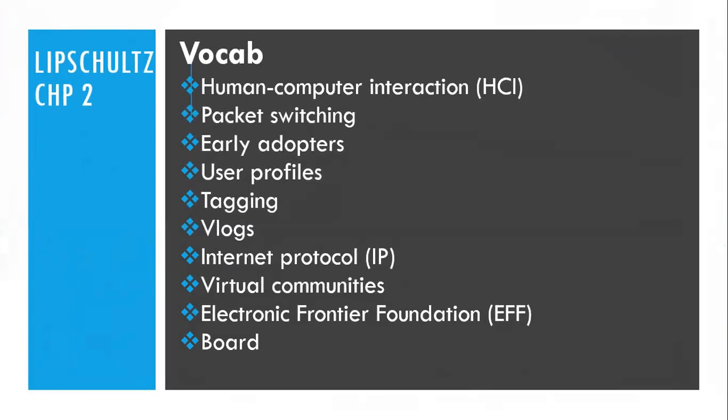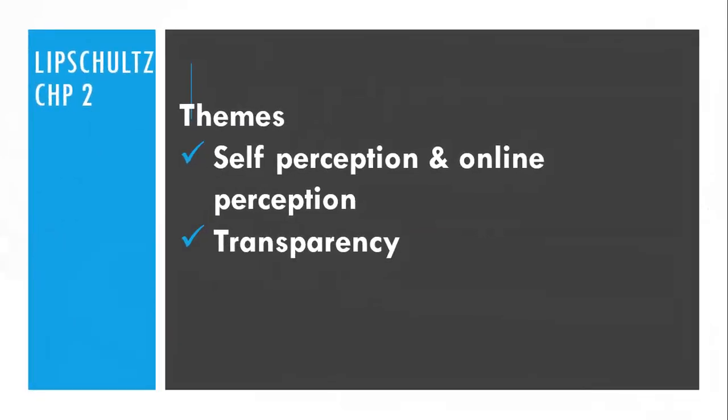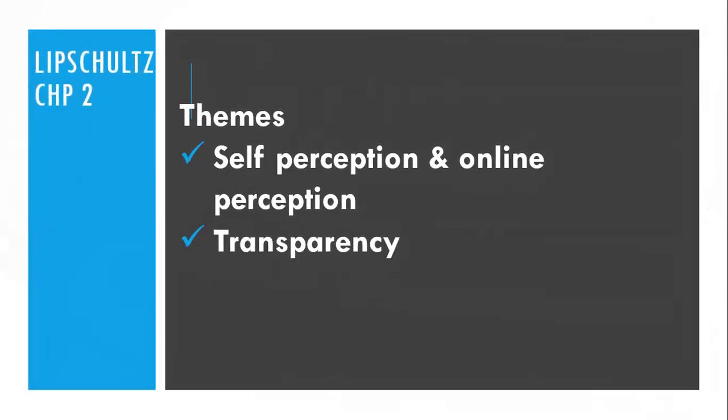We have human communication interaction, packet switching, early adopters, user profiles, tagging, blogs, IP, virtual communities, EFF, and ports. The themes of chapter two are wide-ranging — they start with both self-perception and online perception, and then end with transparency and a little bit of community. We'll dabble into communities as well.